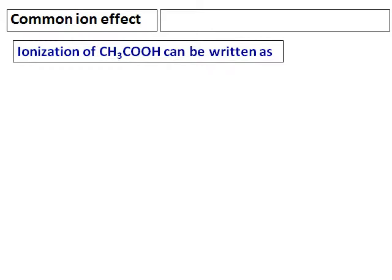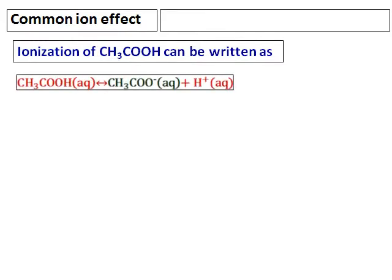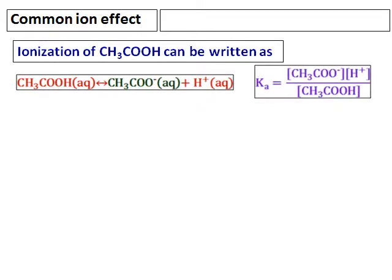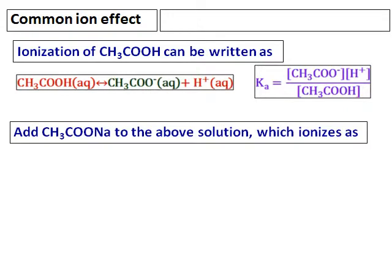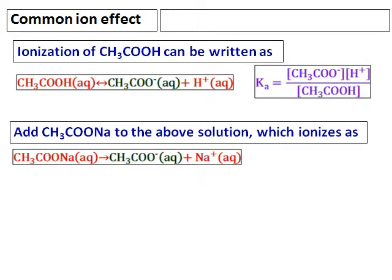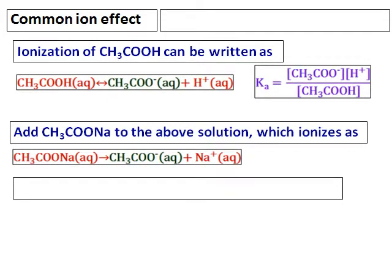Consider the ionization of acetic acid: acetic acid gives acetate and the hydrogen ion, and the Ka of acetic acid is also given. Now, to the same solution, add some sodium acetate. Sodium acetate will ionize completely, giving the acetate ion and Na⁺. Sodium acetate is the conjugate base of the weak acid, acetic acid.